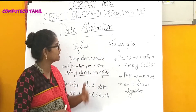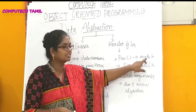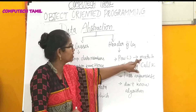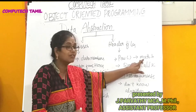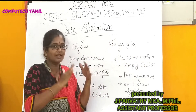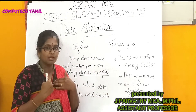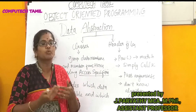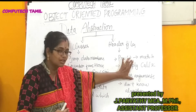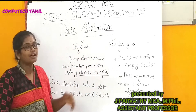Next, let's look at header files. We can use header files to access pre-built functions in the program. For example, Math.h — we include this header file to use mathematical functions like the power function. We know how to call it and pass arguments, but we don't know the internal algorithm. This is data abstraction.